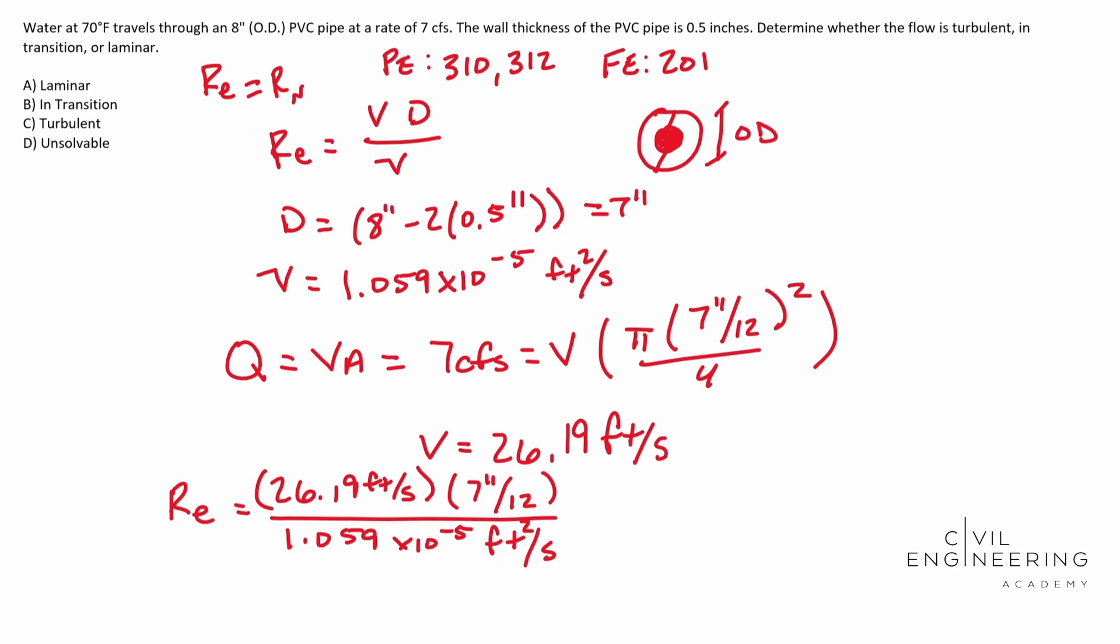Alrighty. So we notice that this is going to end up unitless because we have feet per second times feet. So that's feet squared per second divided by feet squared per second. So we're doing good. This guy ends up being 1.44 times 10 to the sixth power.